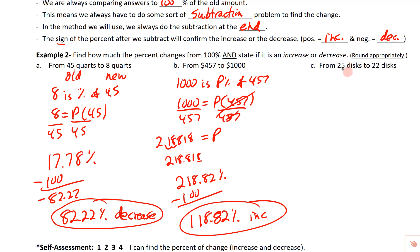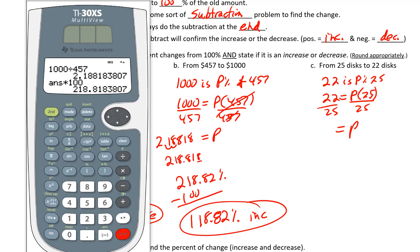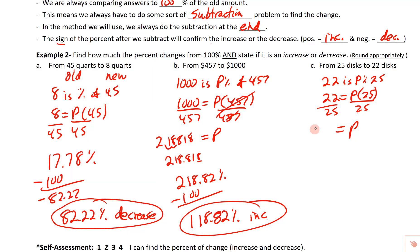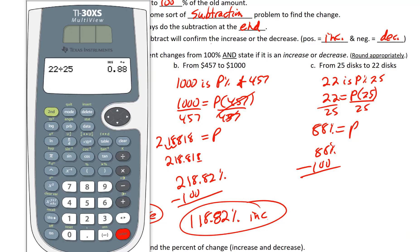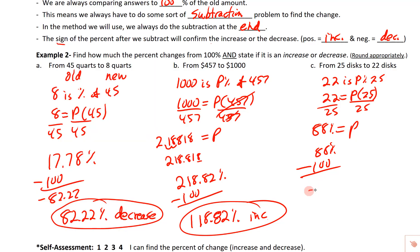Last one: it went from 25 disks to 22 disks. The new one is smaller than the old one, so this will be a decrease. We write: 22 is some percent of 25, divide by 25. We get P equals 0.88, which is 88%. Subtracting 100 gives 88% minus 100% equals negative 12%. So this is a 12% decrease.